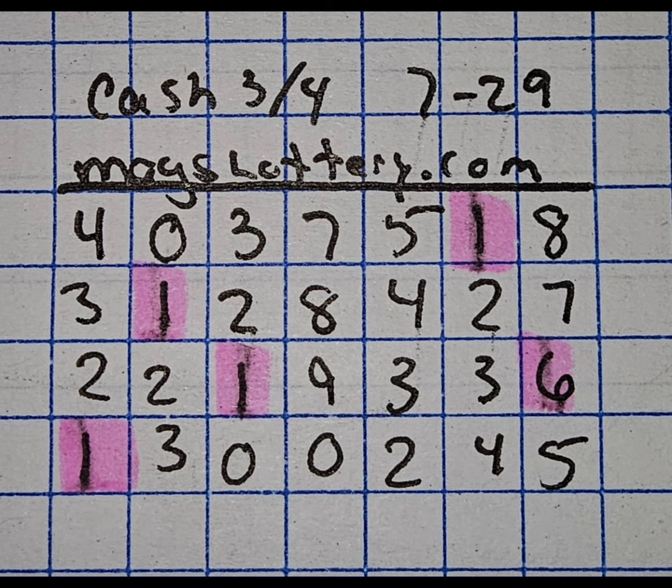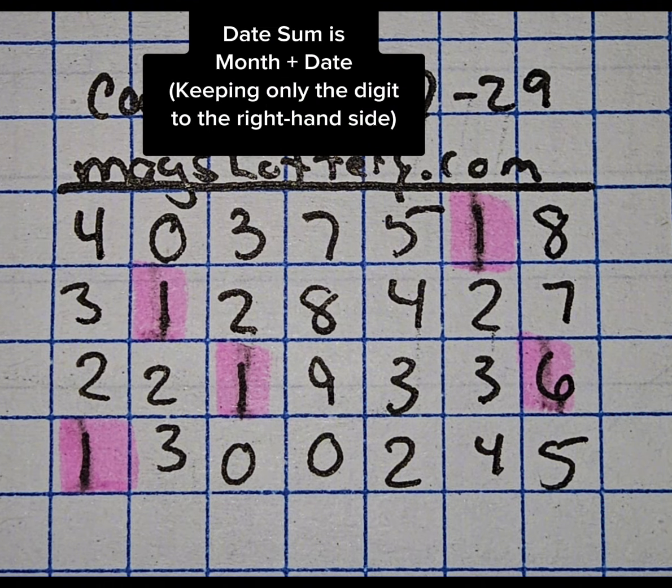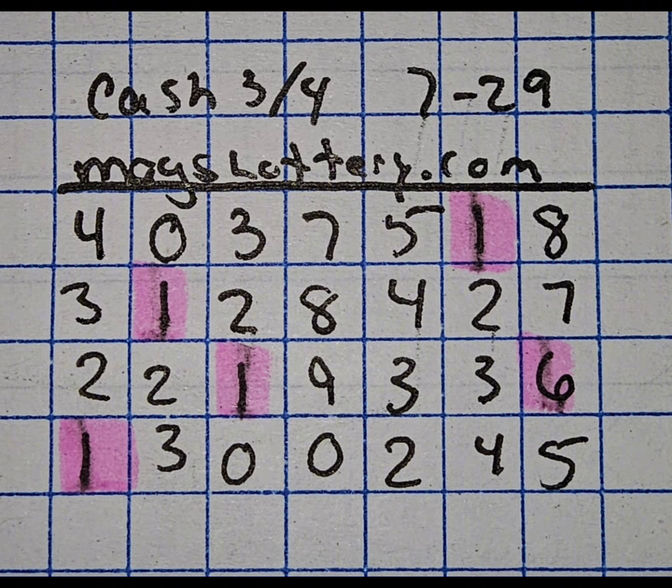Now, you'll see that certain digits are highlighted. That's your date sum. Your next hit will have at least one of the digits either touch or include one or more of those areas. Sometimes there's a lot on the board, sometimes fewer.